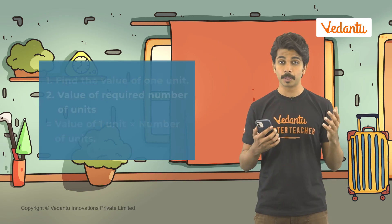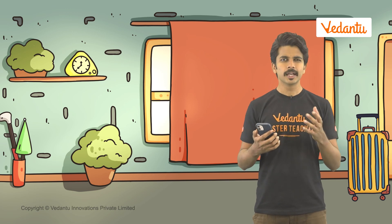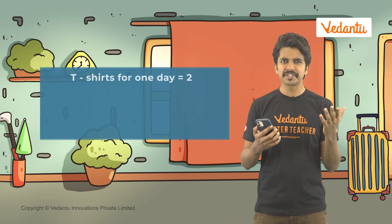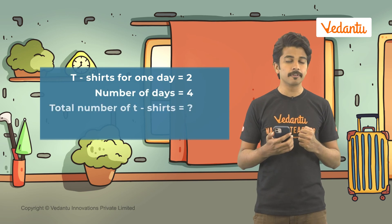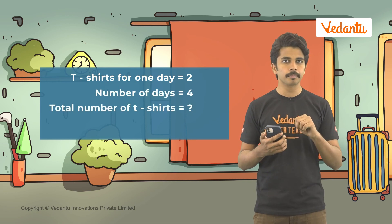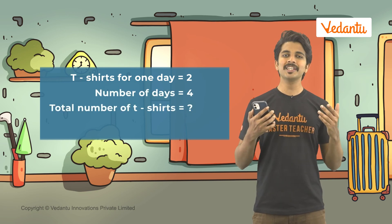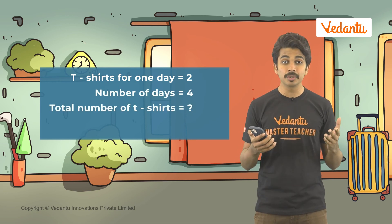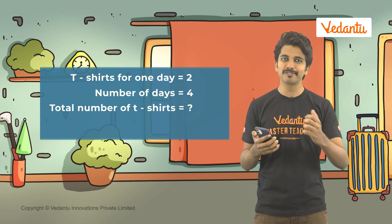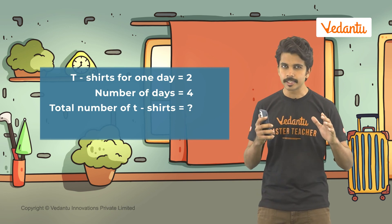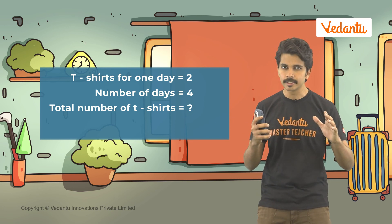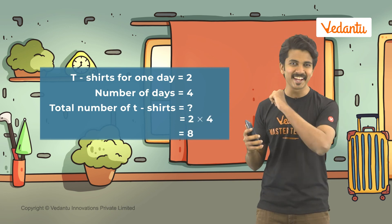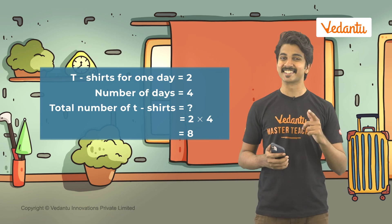I will soon be packing my bag. I need to pack t-shirts — I should carry 2 for each day. So how many t-shirts will I need for a 4-day trip? We can use the unitary method to find the answer. It is 8 exactly!